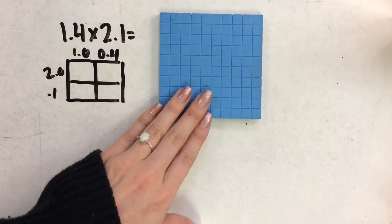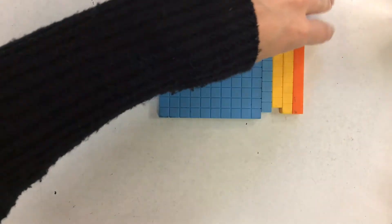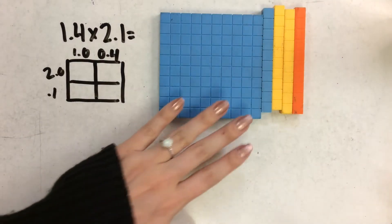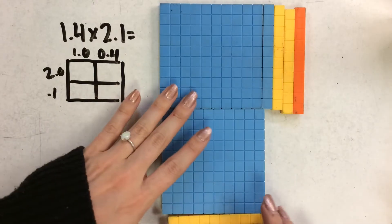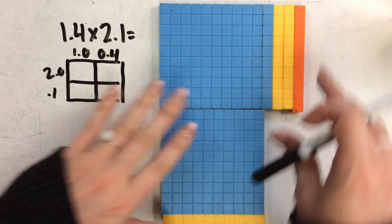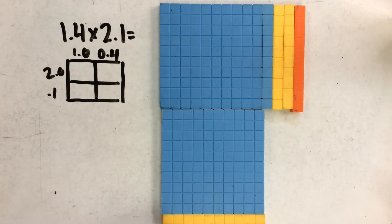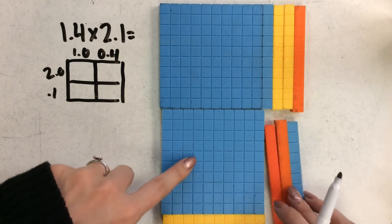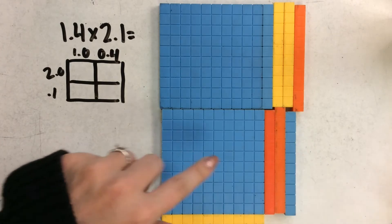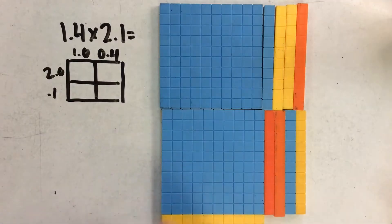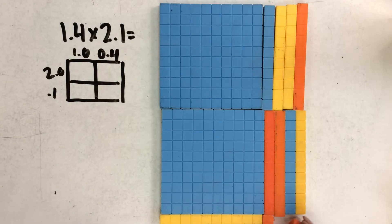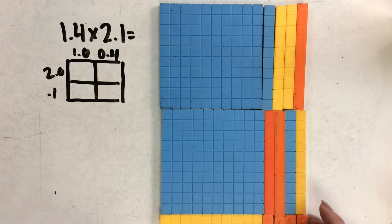I'm going to use base ten blocks. Here I'm going to represent one and four tenths going this way, and two and one tenth going this way. Then I'm going to fill in the rest with base ten blocks — filling in these tenths here, then this one goes in here, and right here I'm going to fill it in with the little guys, the hundredths. So there's one, two, three, four hundredths.